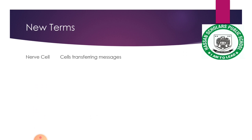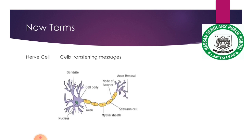Next one is nerve cells. Nerve cells are cells that transfer messages. Our body functions are performed and messages are transferred through nerve cells — from one part to another part of our body.